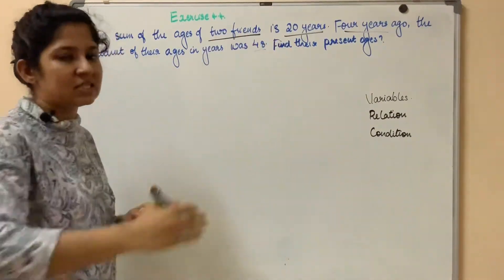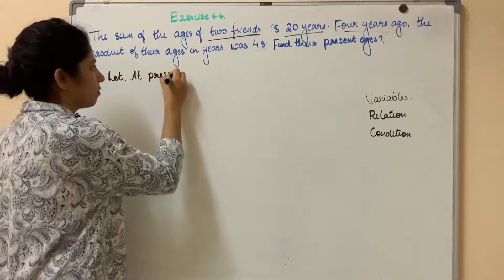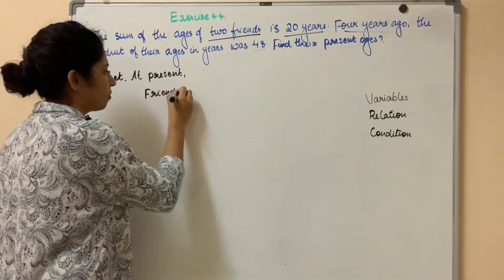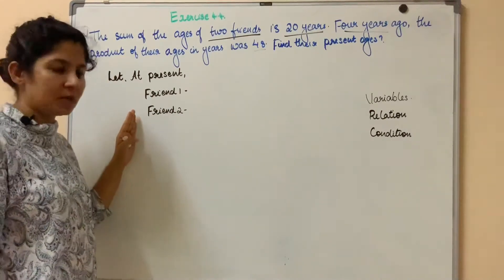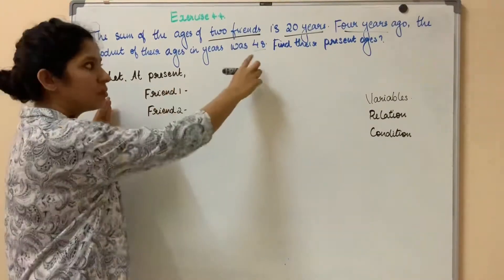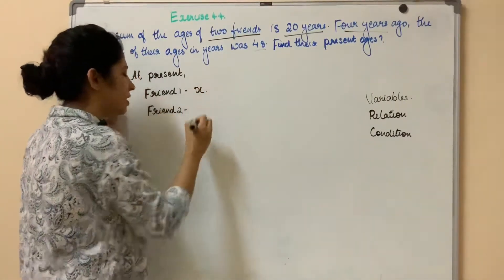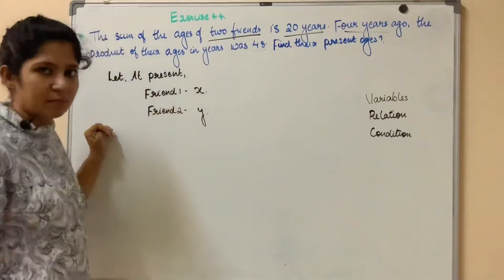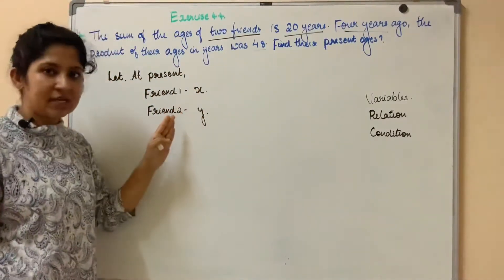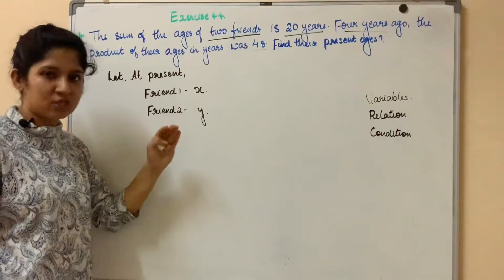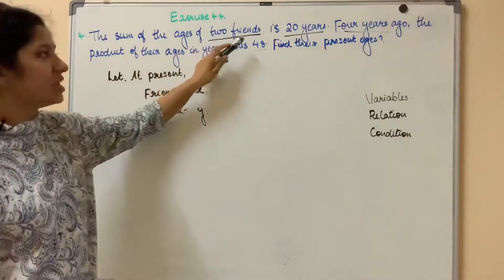Now let's assume the variables. For two friends, let's call them Friend 1 and Friend 2. At present, Friend 1's age is x years and Friend 2's age is y years. Now let's complete the first step. The next step is the relation — we have two variables, so let's find the relation between x and y. The sum of the ages of two friends is 20 years.